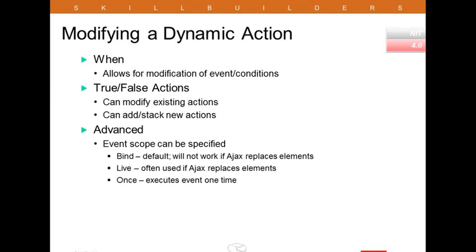Modifying a dynamic action is something you would expect to be able to do in APEX. The initial creation wizard will configure things for you; you can then test it, and if it's not exactly right, you can make changes. It's a bit like a tree, with the one condition being the parent and your true/false actions becoming children. You can modify the event that triggers the true or false actions along with any conditions, and you can also add additional true and/or false actions — you can stack them, much like the branches we talked about yesterday.